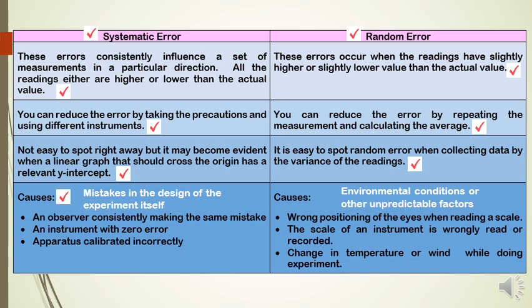The causes of systematic error include an observer consistently making the same mistake, an instrument with zero error, or apparatus calibrated incorrectly. The causes of random error include wrong positioning of the eyes when reading a scale from different angles, the scale of an instrument being wrongly read or recorded, or changes in temperature or wind while doing the experiment.